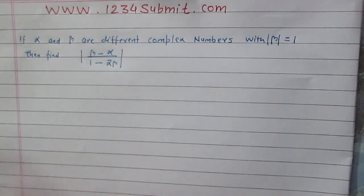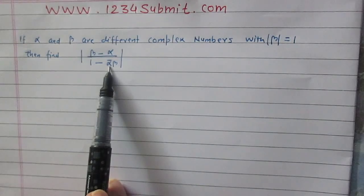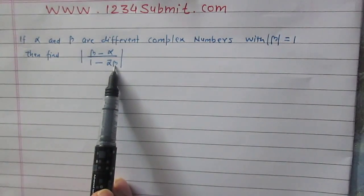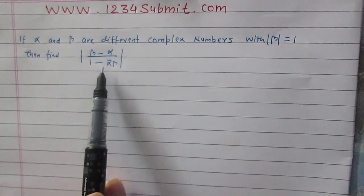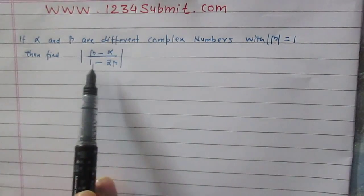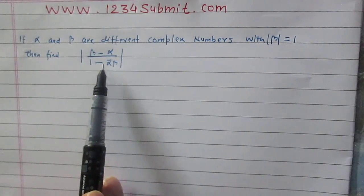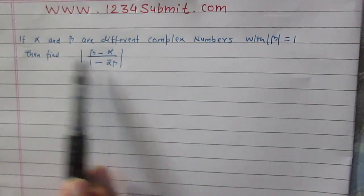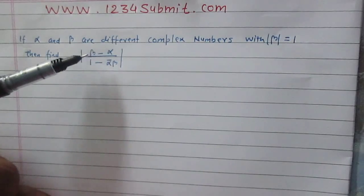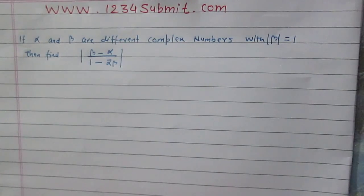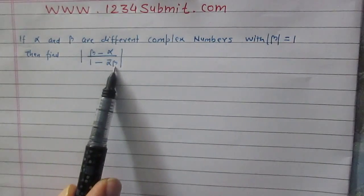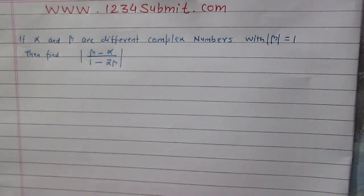Again, the conjugate of a complex number is also a complex number, and beta is a complex number, so alpha conjugate multiplied by beta is a complex number. Now, 1 minus a complex number — since 1 is a real number, 1 minus a complex number is a complex number. At last, we can say that beta minus alpha divided by 1 minus alpha conjugate beta is the division of two complex numbers, and the result is a complex number itself.